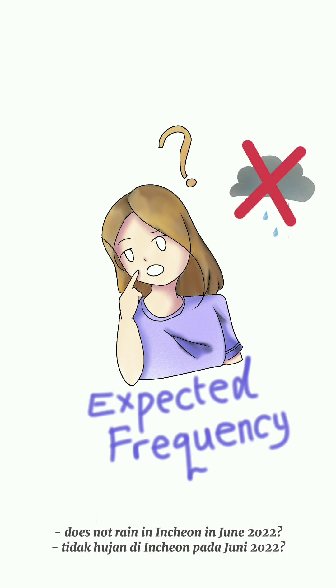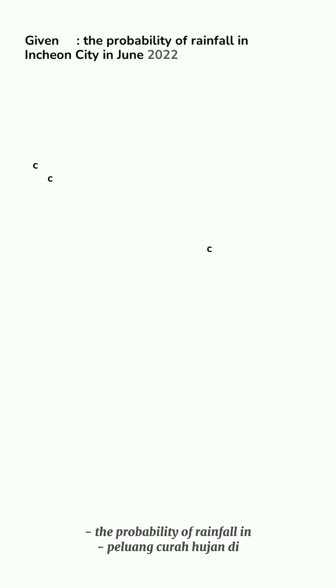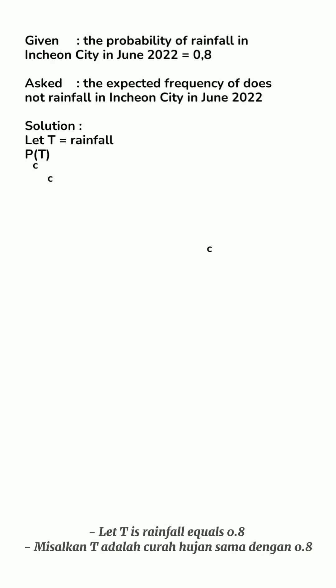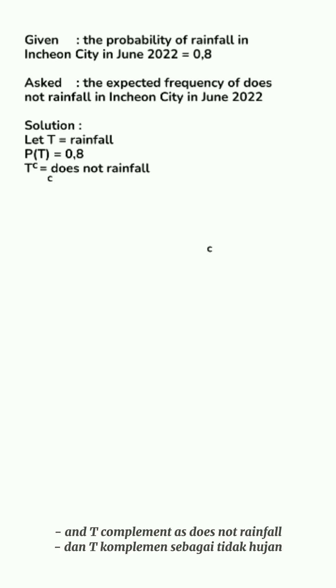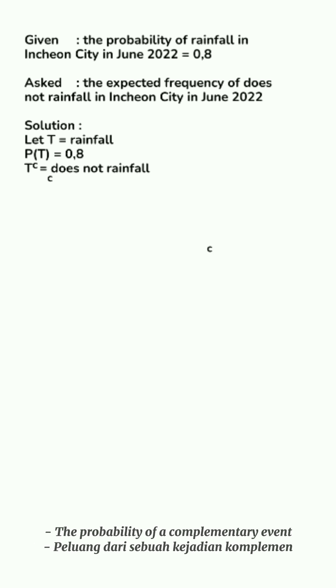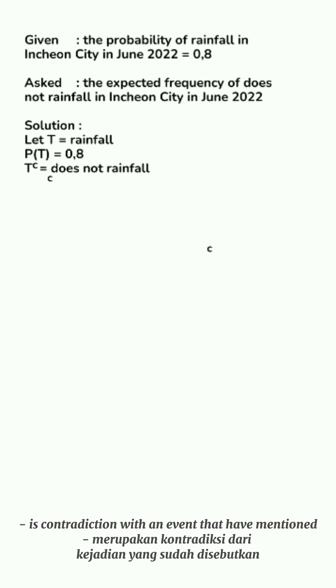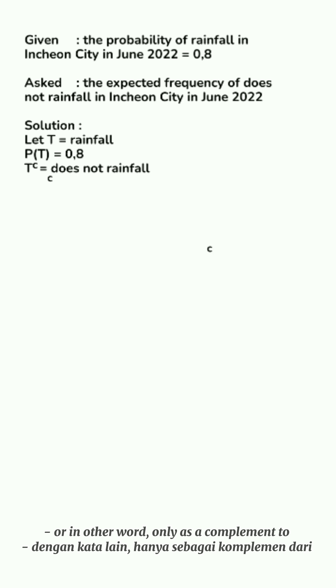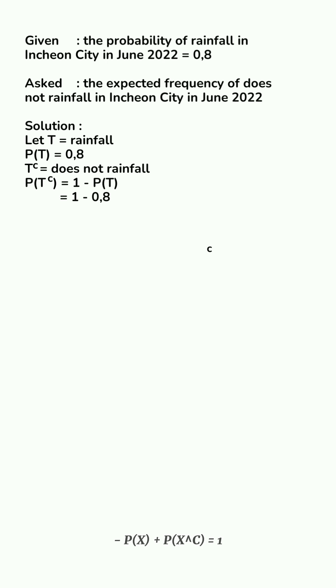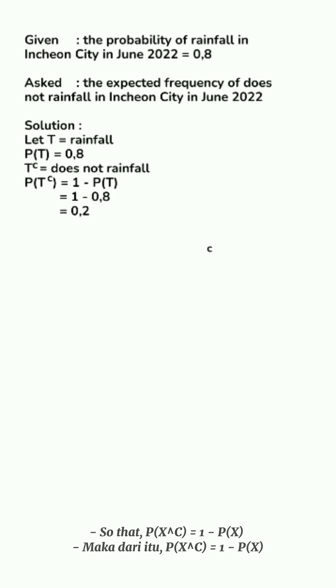She wants to figure out the expected frequency of 'does not rain' in Enchant City in June 2022. Given: the probability of rainfall P(T) = 0.8. Rain and does not rain is an example of a complementary event. Two events are complementary when one event occurs if and only if the other does not. We can write that P(X) + P(X complement) = 1, so P(X complement) = 1 − P(X).